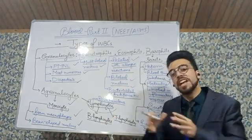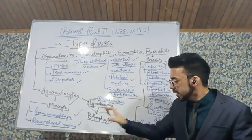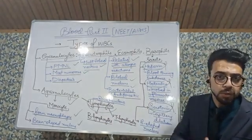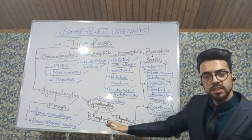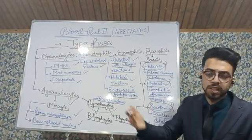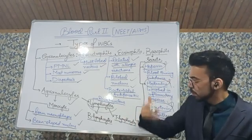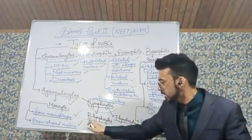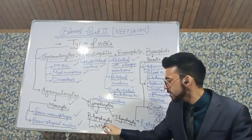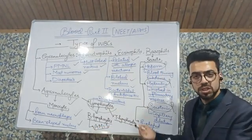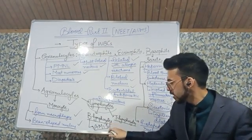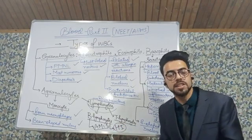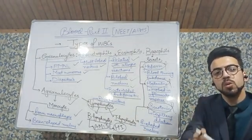B-lymphocytes are the source of antibody-mediated immunity. They first produce plasma cells, and their descendants form antibodies. This immunity is called AMIS — antibody-mediated immune system — and it also has another name: HI, which stands for humoral immunity.